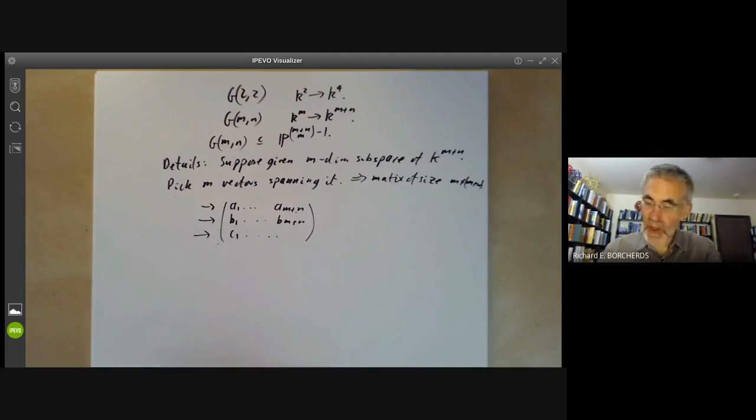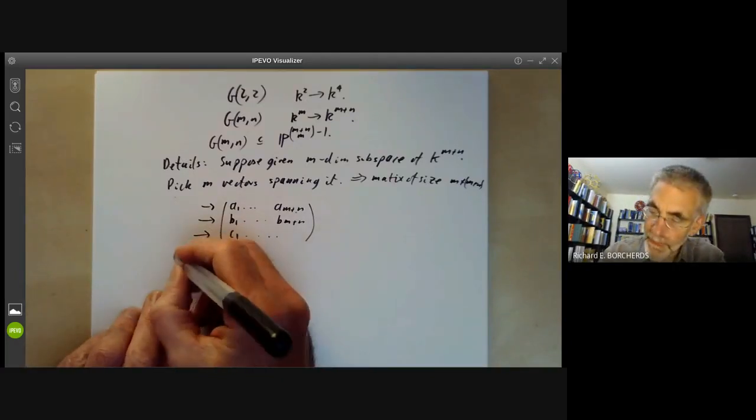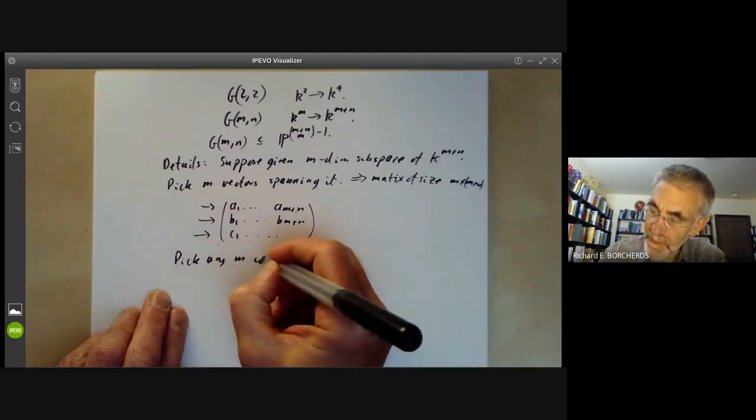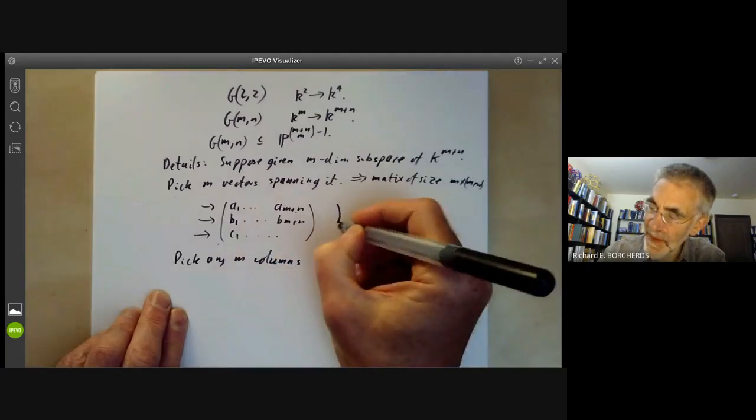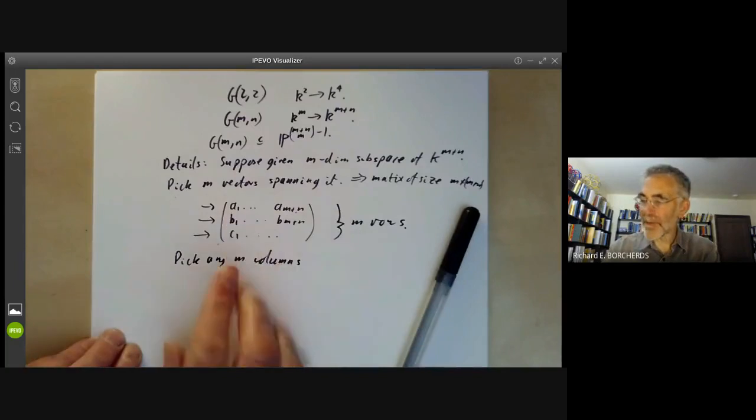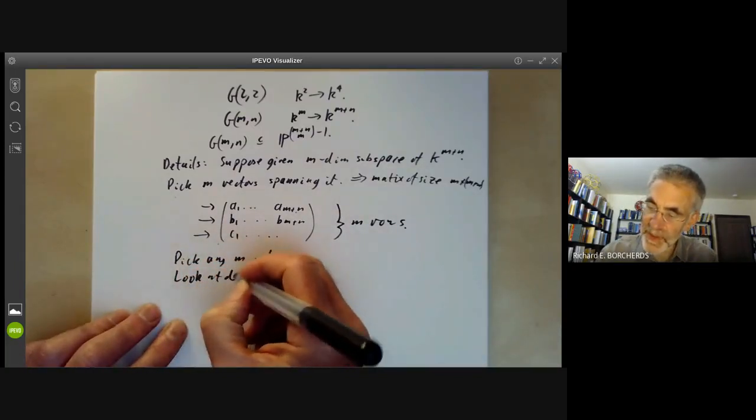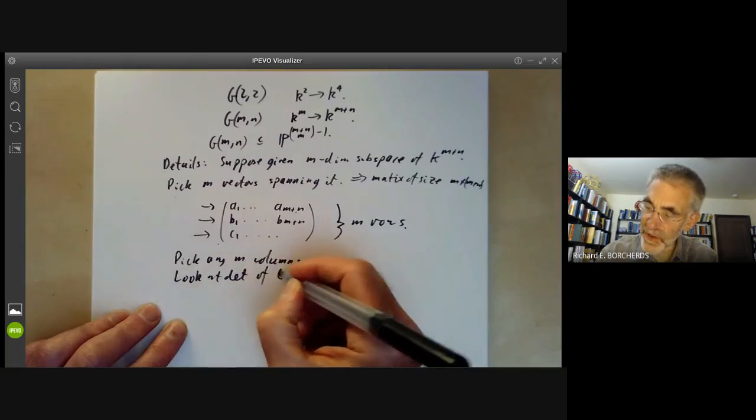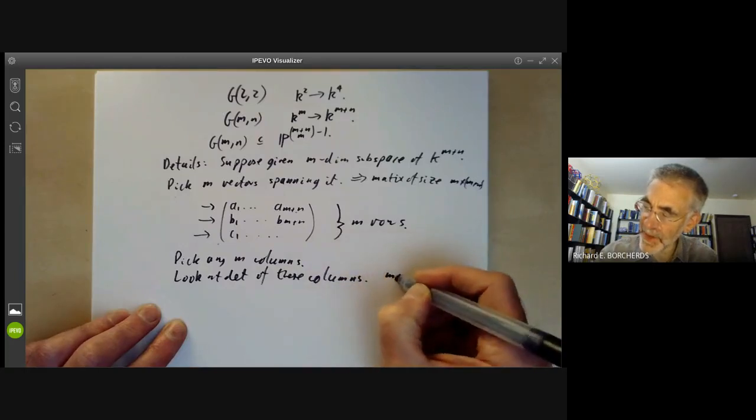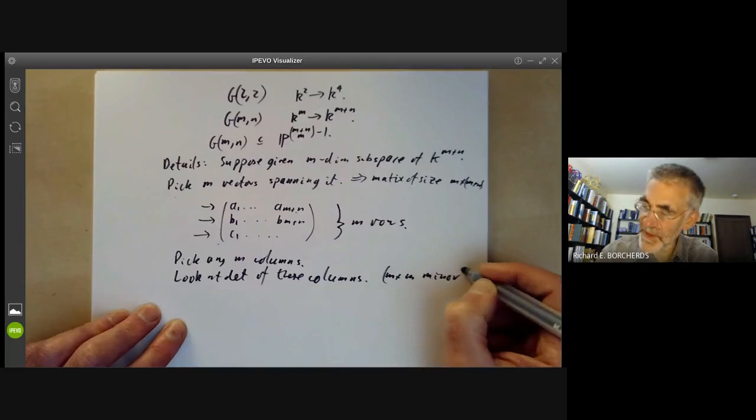And now we pick any M columns. So here we have M rows. We might pick M columns and look at the determinant of these columns. So this is just the determinant of an M by M minor of this large matrix.